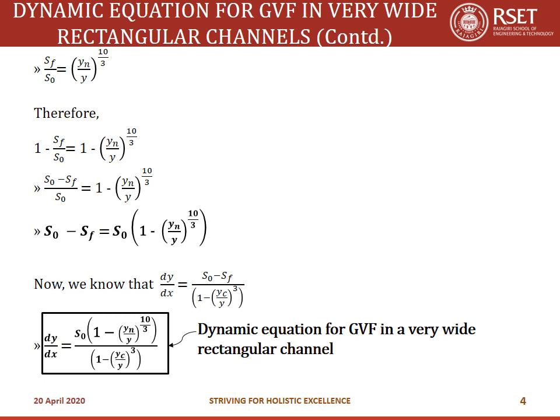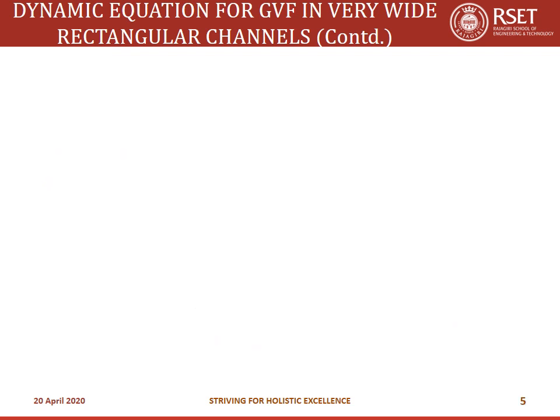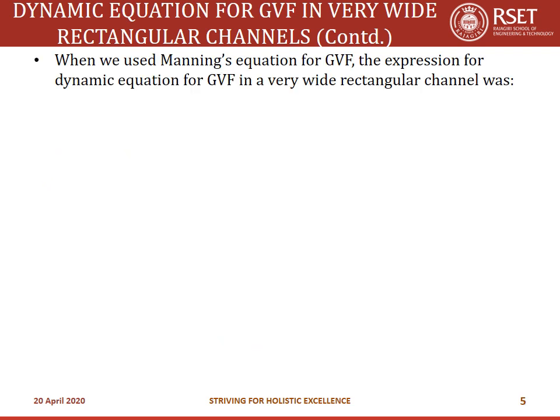This was the derivation for the dynamic equation for gradually varied flow in a very wide rectangular channel. dy/dx equals S0 times [1 - (yn/y)^(10/3)] divided by [1 - (yc/y)³]. This derivation used Manning's equation for discharge. Manning's equation is not the only option; we can also use Chezy's equation, v = C·√(R·Sf), to represent gradually varied flow.